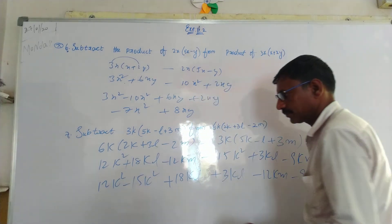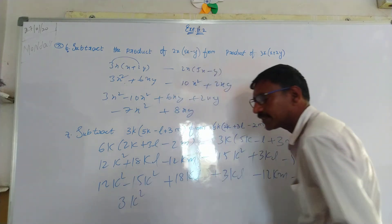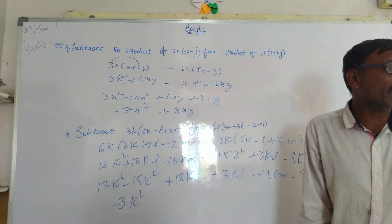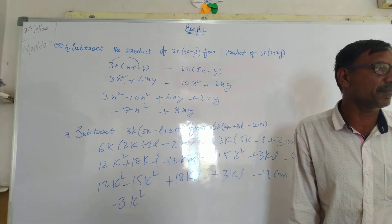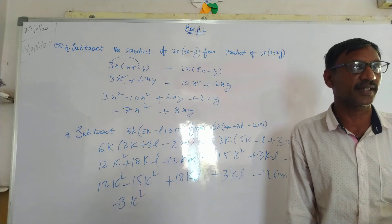3K square, 15K square, 15K square, minus.